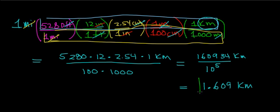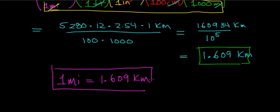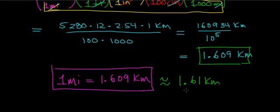So the relationship is that 1 mile equals 1.609 kilometers. Oftentimes we round this number up to approximately 1.61 kilometers for use in many calculations. The value 1.609 is the more accurate figure, while 1.61 is a good approximation commonly used in conversions between miles and kilometers.